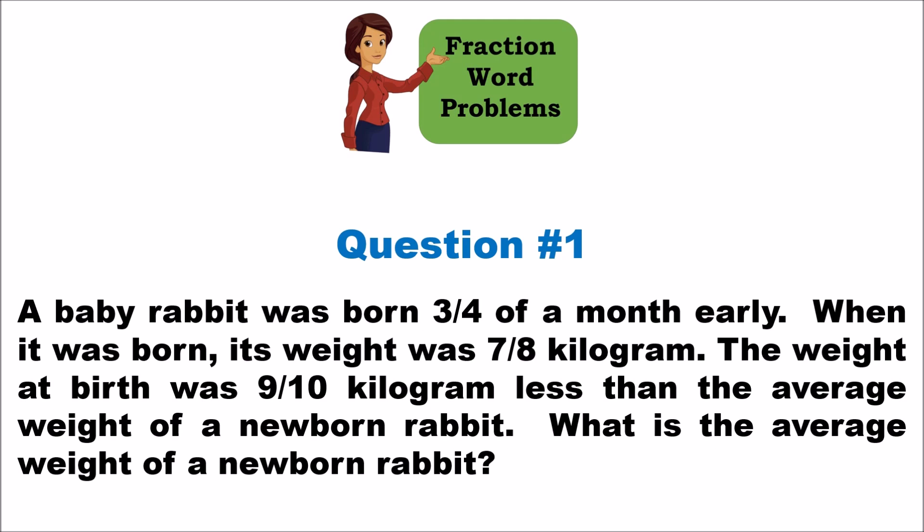Let's identify the facts. Fact one: the baby rabbit was born three-fourths of a month early. Fact two: weight at birth was seven-eighths of a kilogram. Fact three: its weight at birth was nine-tenths of a kilogram less than the average weight of a newborn rabbit. In questions like this, you'll have useful information and some useless information.